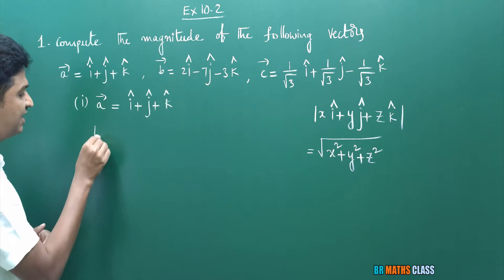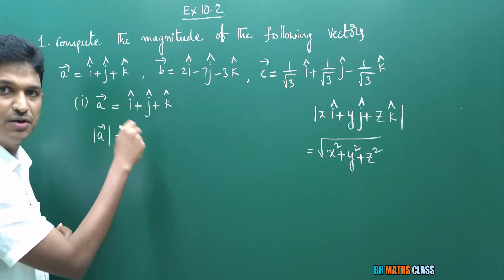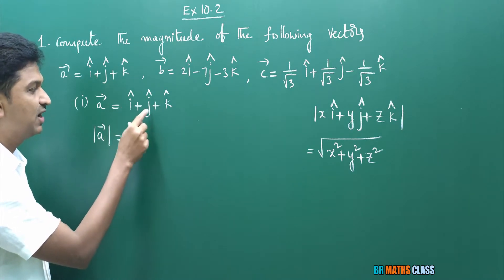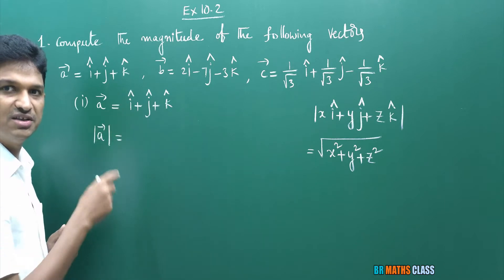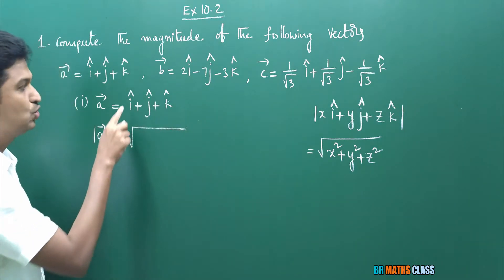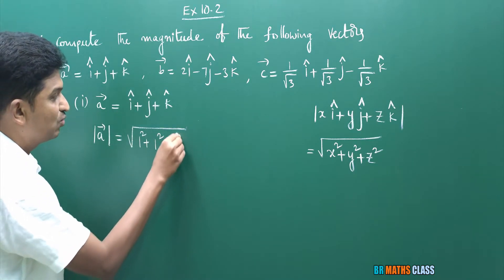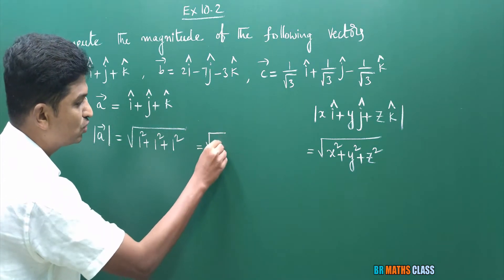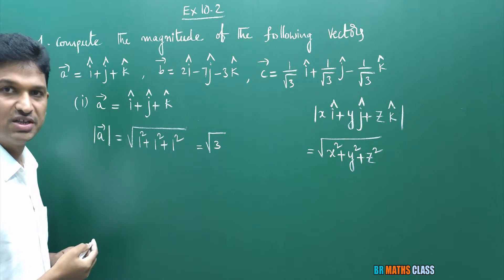The scalar components of a bar are 1, 1, 1. So the magnitude is the square root of 1² + 1² + 1², which equals root 3. So the magnitude of this vector is root 3.